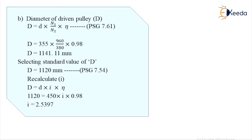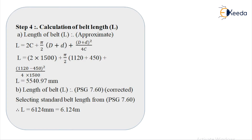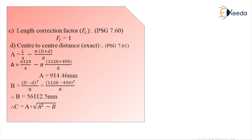Recalculating speed ratio i: i = D/(d × η) = 1120/(450 × 0.98) ≈ 2.53. Step 4: Belt length calculation. L = 2C + π/2·(D + d) + (D − d)²/(4C). Substituting values, calculated belt length = 5540.97 mm. The standard belt length from PSG 7.60 is 6124 mm.